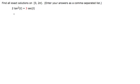All right, in this problem we want to solve this equation: 2 times tangent squared of t equals 3 times secant of t, and find all the solutions on the interval from 0 to 2π.